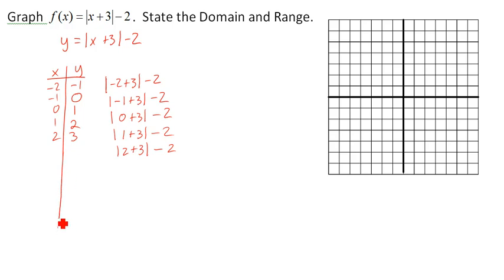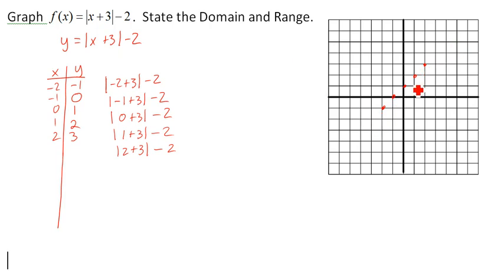Now if I go ahead and plot these points — negative 2 negative 1, negative 1 zero, 0 one, 1 two, and 2 three — you may remember that an absolute value is supposed to have kind of a V shape. Since it looks like I've got the right-hand side here, I'm going to choose some numbers a little bit earlier to see if I can figure out where the other side of my graph is.